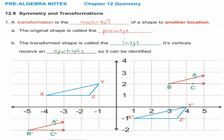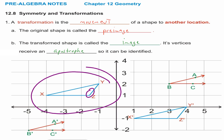Looking at triangle XYZ on the screen, what kind of triangle is it — acute, right, or obtuse? Obtuse. Any time there's an obtuse angle, the triangle has to be obtuse. That angle right there is greater than 90 degrees. One angle greater than 90 makes it obtuse.